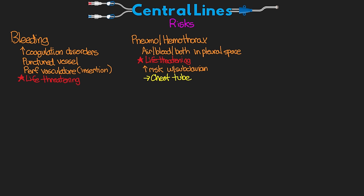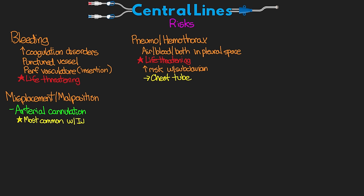Another risk with the central line is misplacement. The first type is arterial cannulation, which is most common with our IJ insertion and can potentially lead to cannulating the carotid artery instead of the jugular vein. This can also occur with the femoral artery since both vessels are very close to each other there. Ultrasound-guided placement really helps to prevent this. We want to make sure we evaluate the color of the blood that's aspirated once a line is placed, although in patients with severe hypoxemia this may be difficult to assess as that blood can look just like venous blood.